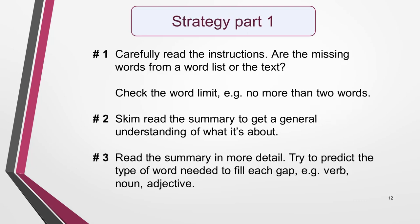We're now ready to look at my step-by-step strategy. I'll show you how to apply this when we work through the sample question, but first you need to understand it. Start by carefully reading the instructions, taking particular note of where you should get the missing words from — a word list or the text. If it's the text, note the word limit for your answer, for example no more than two words. Then skim read the summary to get a general understanding of what it's about. Next, read the summary in more detail and try to predict the type of word needed to fill each gap, such as a verb, a noun or an adjective, and try to guess what that word might be. Don't spend too long on this, but it will save you time later if you do it.